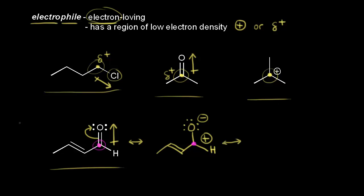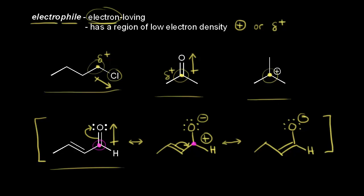But I could draw another resonance structure here. I could take these pi electrons and move them over to here. So I'd have a double bond here now, and an oxygen with a negative one formal charge. I removed a bond from this carbon in blue, so this carbon now has a plus one formal charge. So that is also electrophilic — a full positive charge is going to be attracted to a negative charge. So this compound actually has two electrophilic centers: this carbon here and also this carbon.